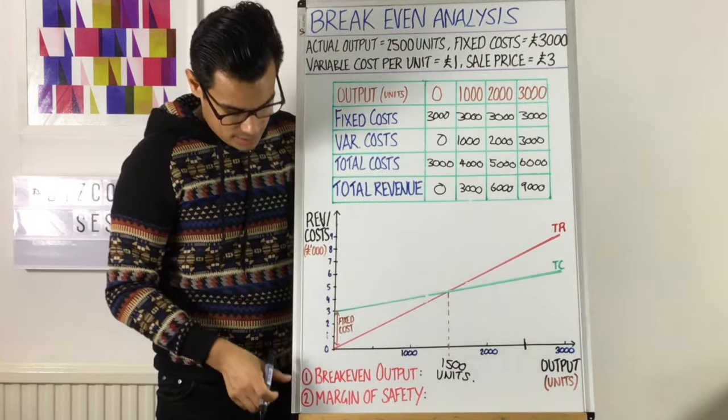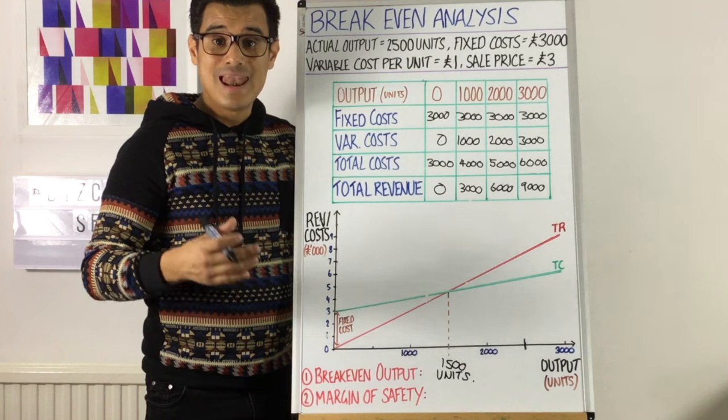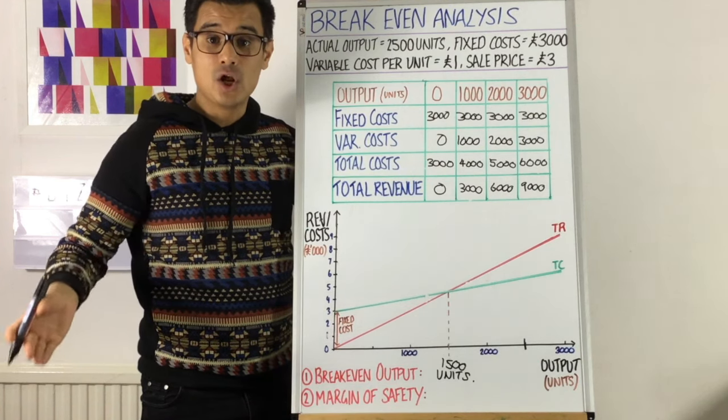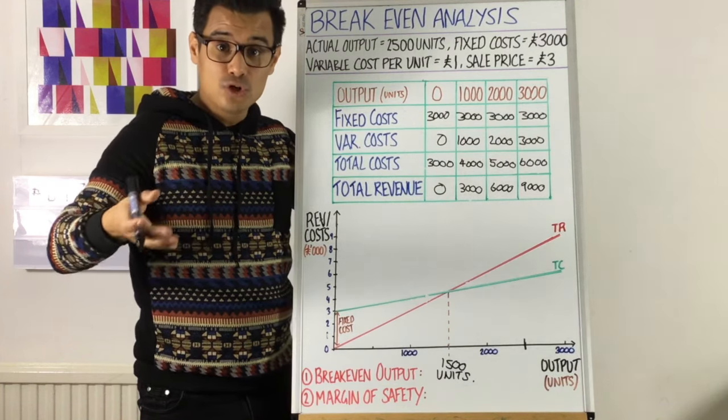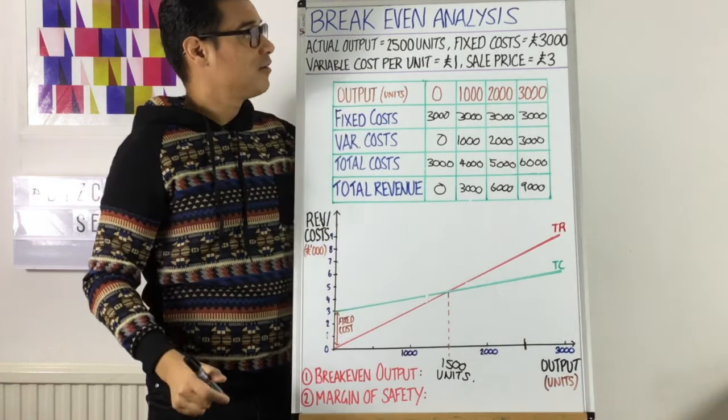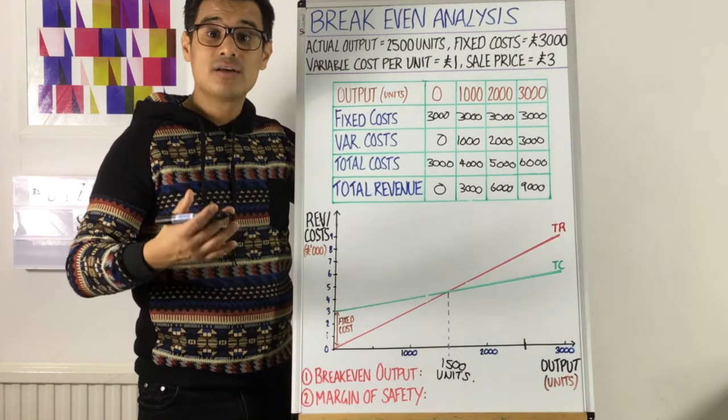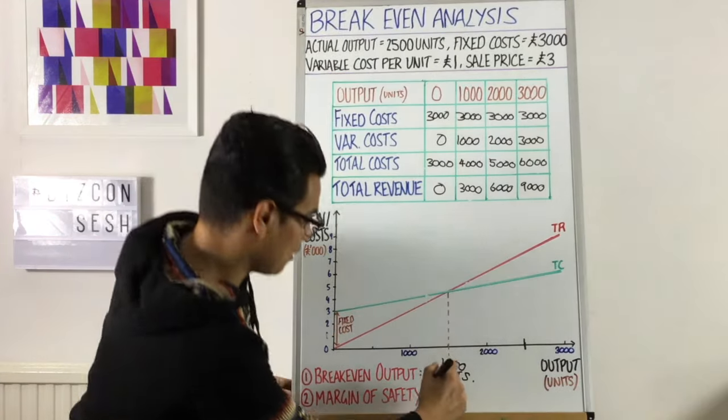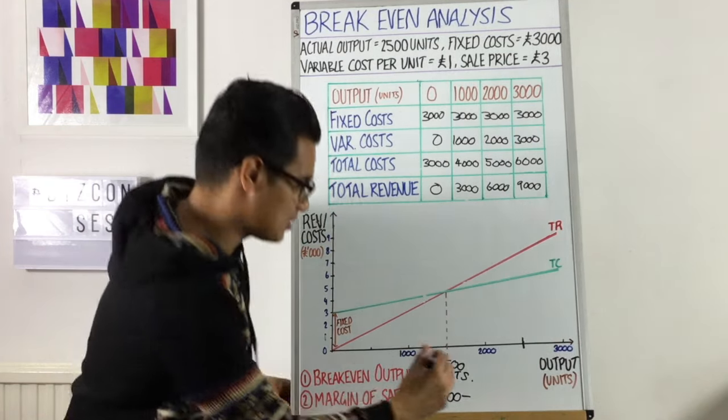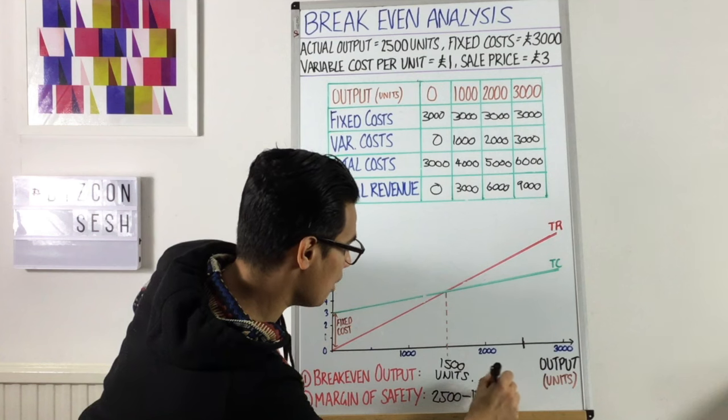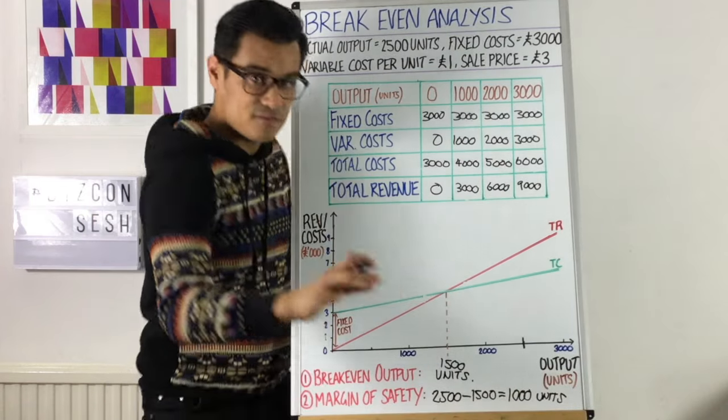Now the other thing that we need to know is margin of safety. Margin of safety is simply how many units less you could make before you start to make a loss. And the way to simply calculate that is take the actual output, the actual output you are making right now, which is here, 2,500 units. And it's simply 2,500 units minus the breakeven output, which is 1,500 units. So 2,500 minus 1,500 comes to 1,000 units. Never forget units.